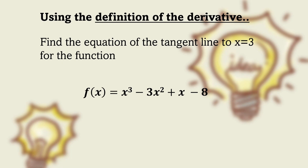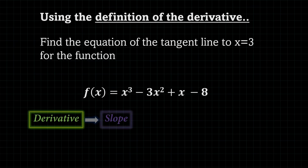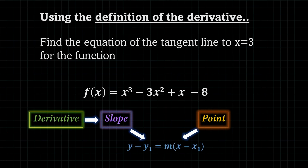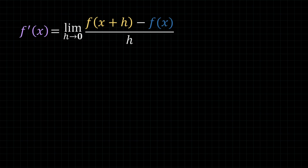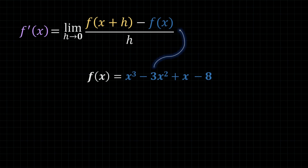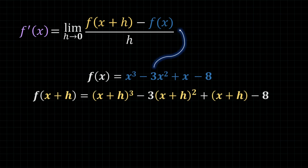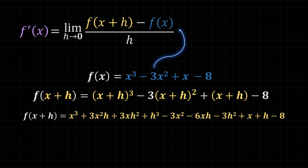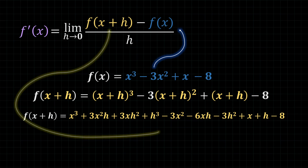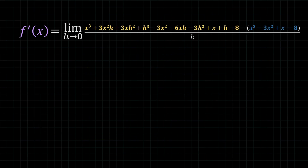Next, we have a cubic function. The exact same thought process applies: we're going to find the slope, the point, and then plug them into the point-slope form, starting with the definition of the derivative. On the numerator, f of x is always given to us. To find f of x plus h, substitute x plus h into where x is in the original function, expand and simplify — we get something long and big like this. We can then substitute this into where f of x plus h is, making our limit look like this.